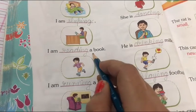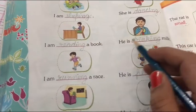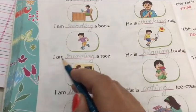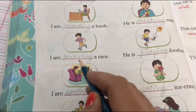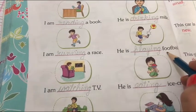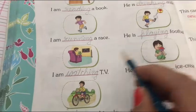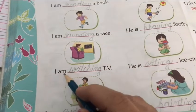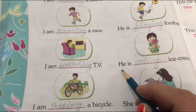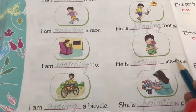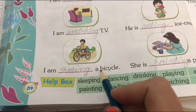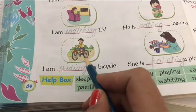I am reading a book. Reading is an action word. He is drinking milk. Drinking is an action word. I am running a race. Running is an action word of this boy. He is playing football. Playing is an action word. I am watching TV. Watching is an action word. He is eating ice cream. Eating is an action word. I am riding a bicycle. Writing is an action word.